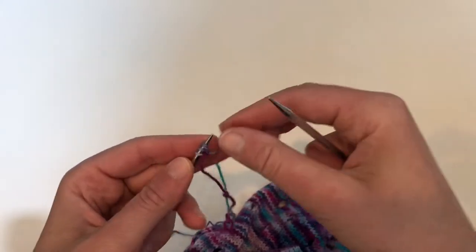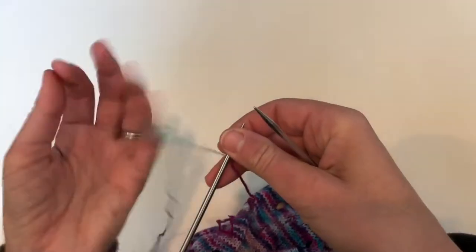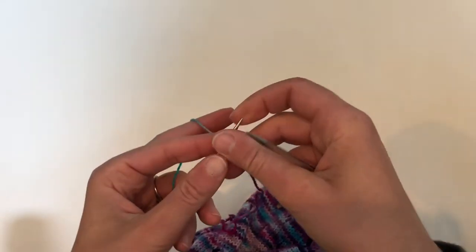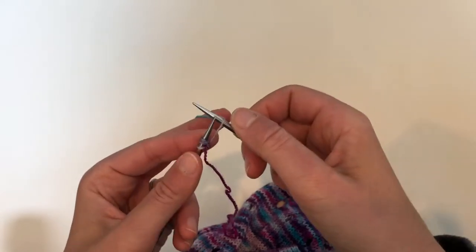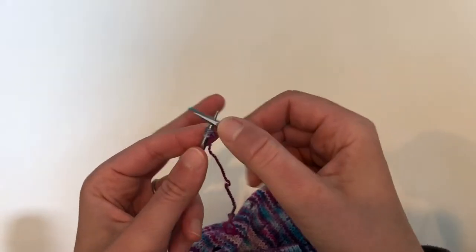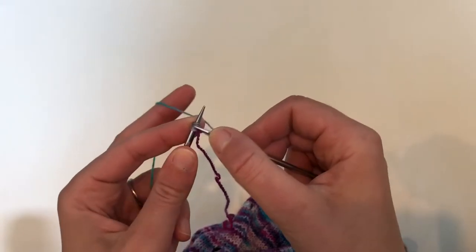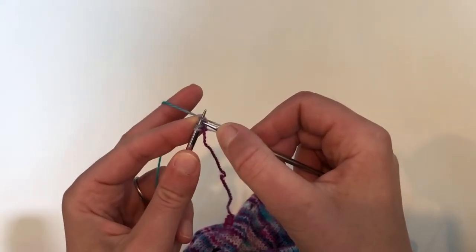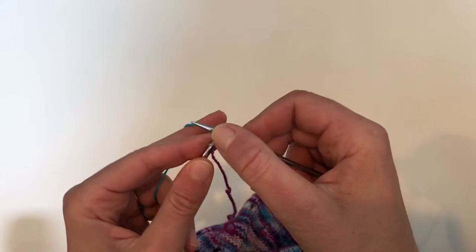And then to cast on more stitches we're going to yarn over in between creating the I-cord. So it's really just a simple yarn over on that first needle, and you do want to keep it a bit tight if you can, and then knit across those three stitches.